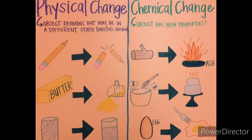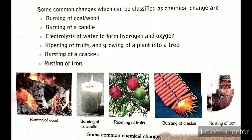Examples of chemical change include coal or wood burning, a candle burning, ripening of fruits, a plant growing into a tree, and crackers bursting. All these are examples of chemical change.